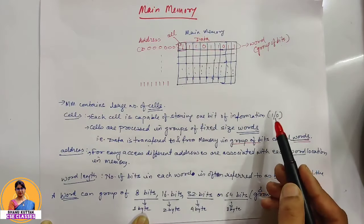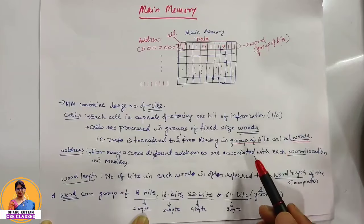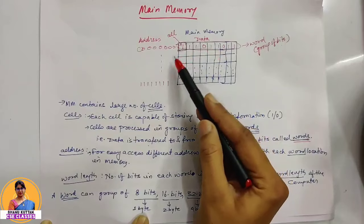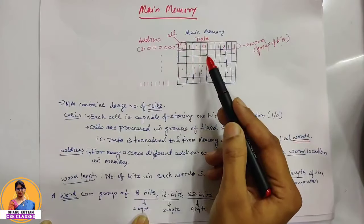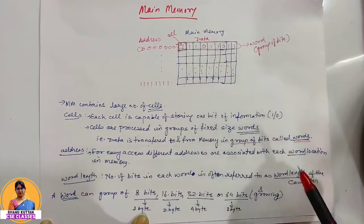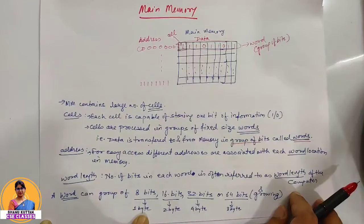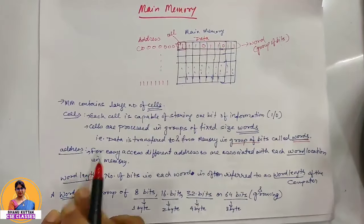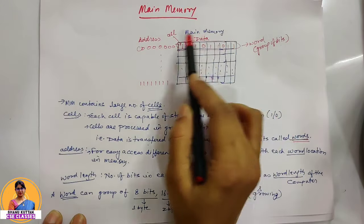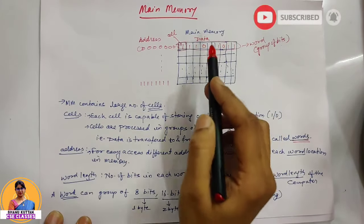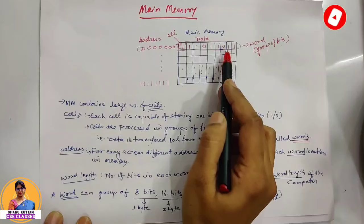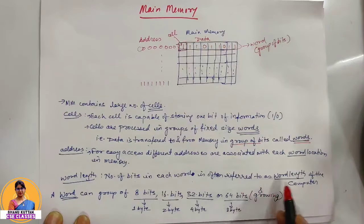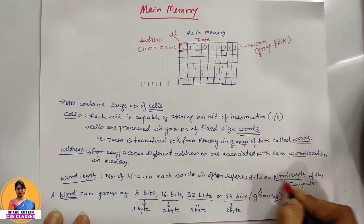We need to access and address every word, and we need control commands — do we need to store or load them in memory? We can give these two commands. The number of bits stored in a word that we can store at a time is called the word length of the computer. The number of bits in each word is often referred to as the word length of the computer.